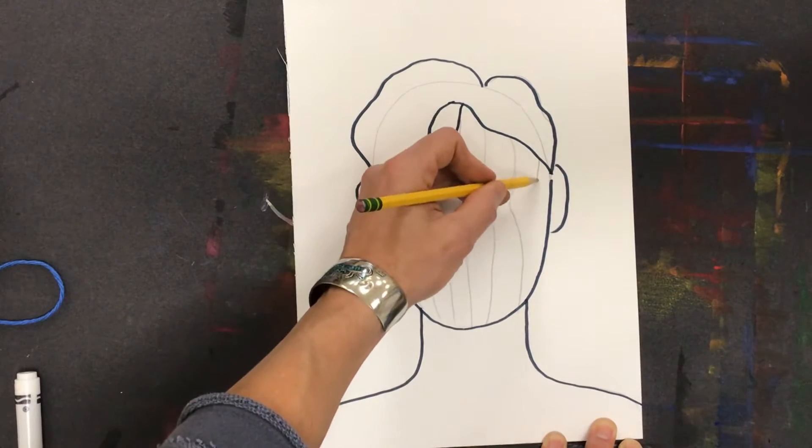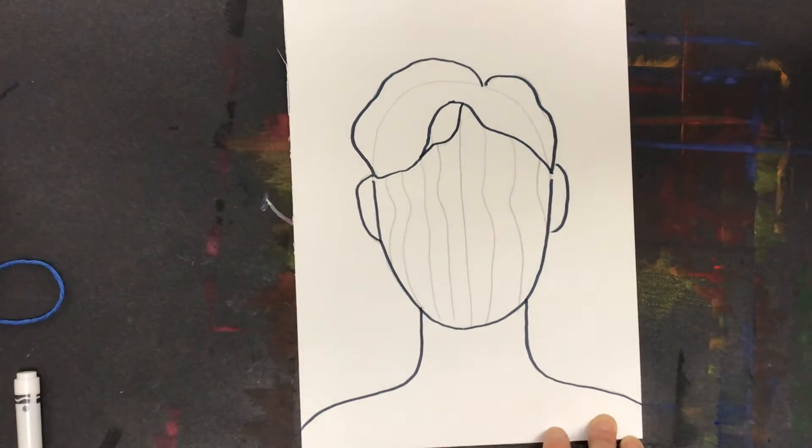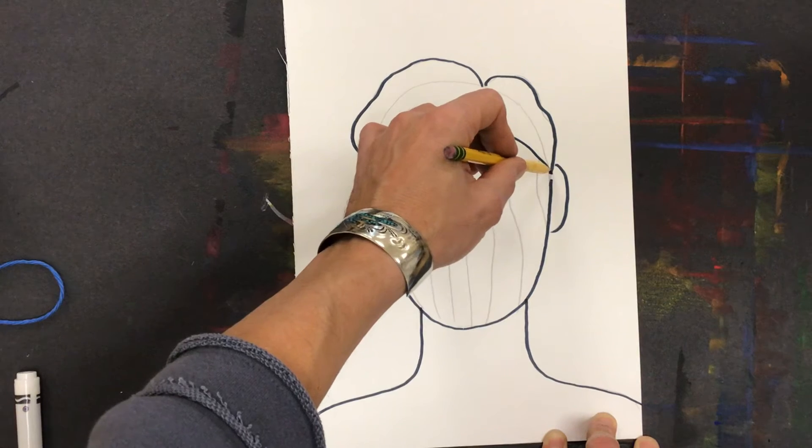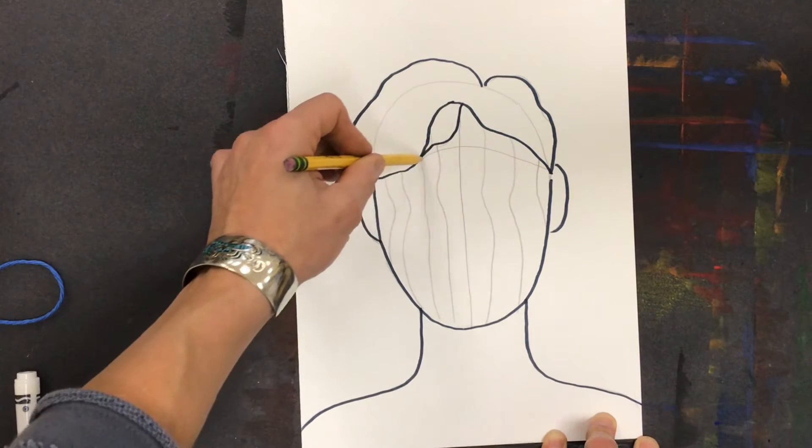I could probably fit one more. Next I'll do a series of horizontal lines. On the forehead, not much is going to happen. I'm going to start here - it's going to curve along the forehead and under the hair.